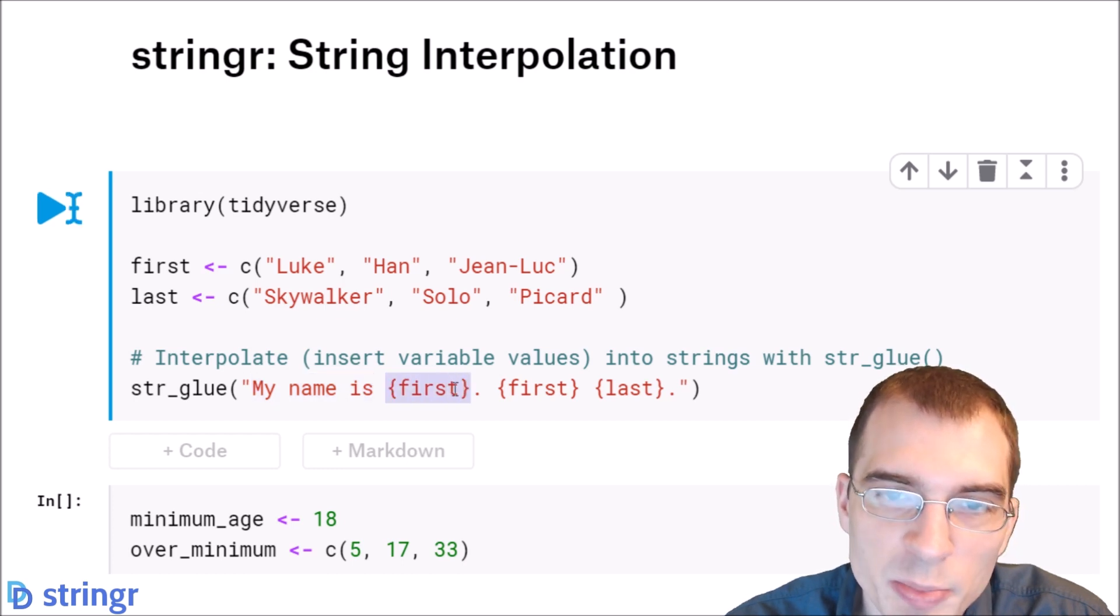Within this character string, we're passing in the value of first, which is a vector we defined earlier. And then we're saying period. And then we're passing in another interpolated value, first again, and then last. So essentially, we're telling it to say, fill in the value here from this vector. So Luke will be filled in here. And then first is used again. So again, it will fill in Luke here. And then finally, it's going to fill in the value from the last variable here, so Skywalker.